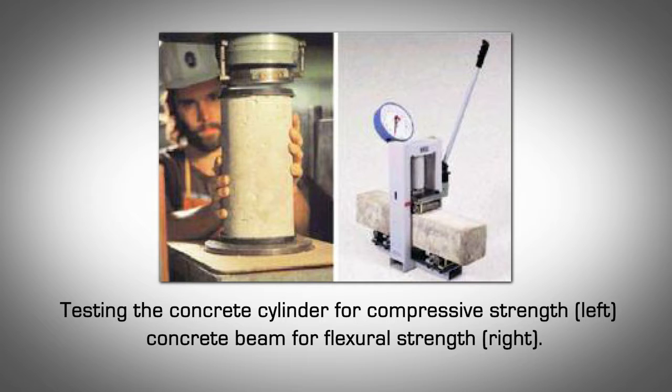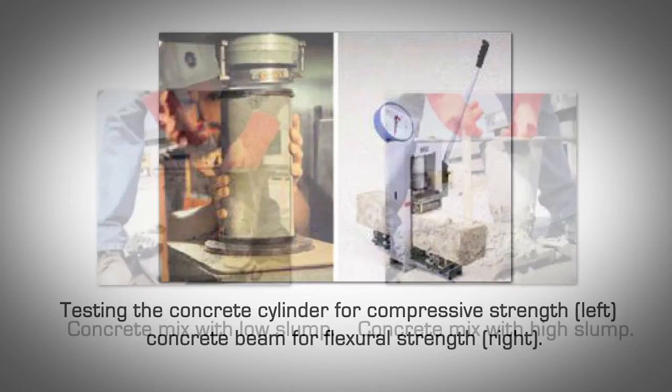Flexural strength test. Flexural strength is the strength of concrete to bending and is usually measured using ASTM C78 standard with a simple beam and third point loading. Most general use concrete has a flexural strength between 500 to 700 PSI.